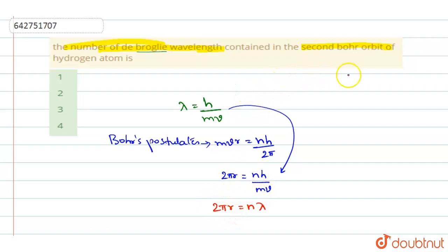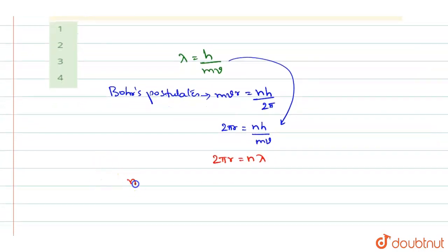So second Bohr's orbit means n equals 2. How many de Broglie wavelengths you get? You get 2 lambda, so it is 2 de Broglie wavelengths.